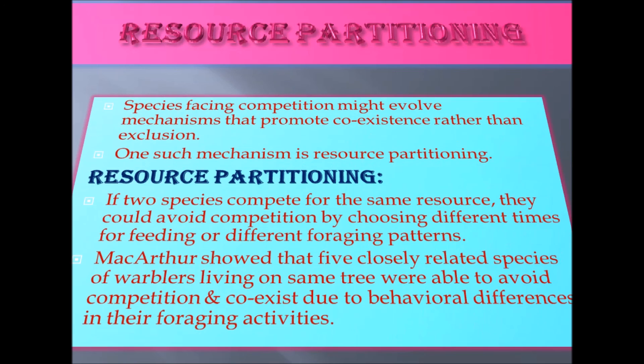MacArthur showed that five closely related species of warblers living on the same tree were able to avoid competition and coexist due to behavioral differences in their foraging activities.